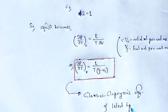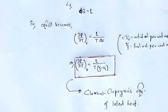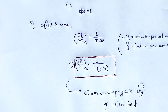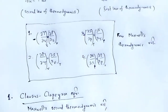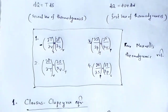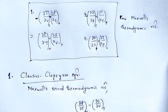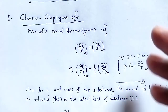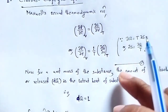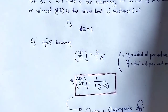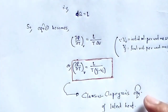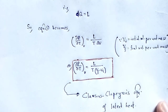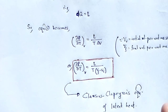So with the help of this video lecture, we understand one of the applications of Maxwell's thermodynamic relations, that is the Clausius-Clapeyron equation. We used Maxwell's second thermodynamic relation, the second law of thermodynamics, and the concept of latent heat, and finally derived the Clausius-Clapeyron equation from Maxwell's thermodynamic relations. With these useful and informative notes, let me wind up this session. Thank you.